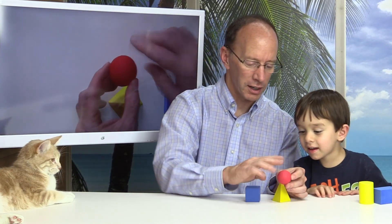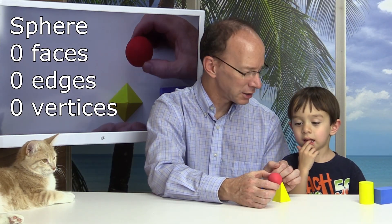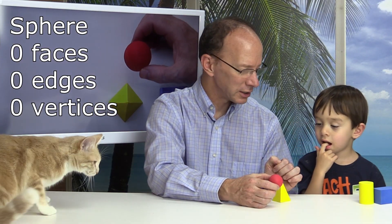There are no flat sides on a sphere. It's just round. So there are no faces on a sphere, there are no edges on a sphere, and no vertices on a sphere.